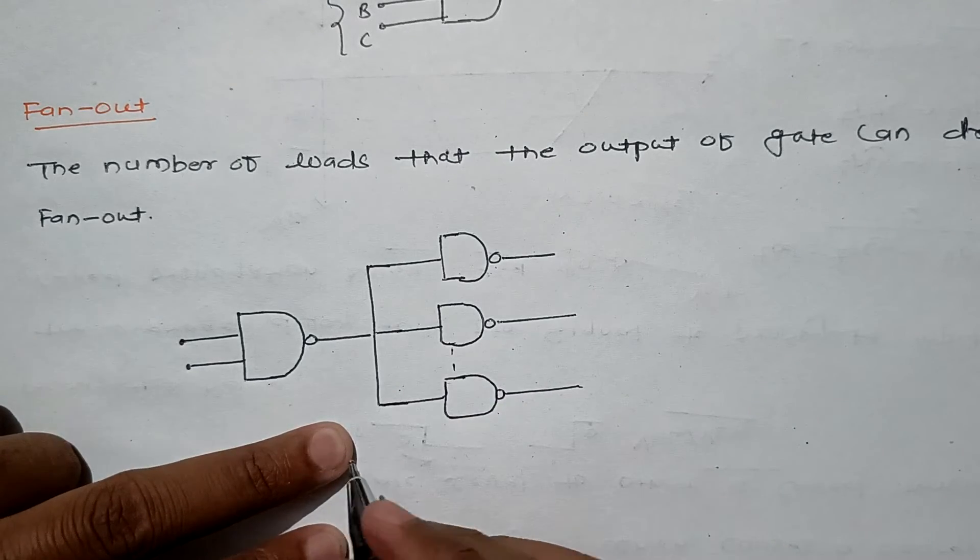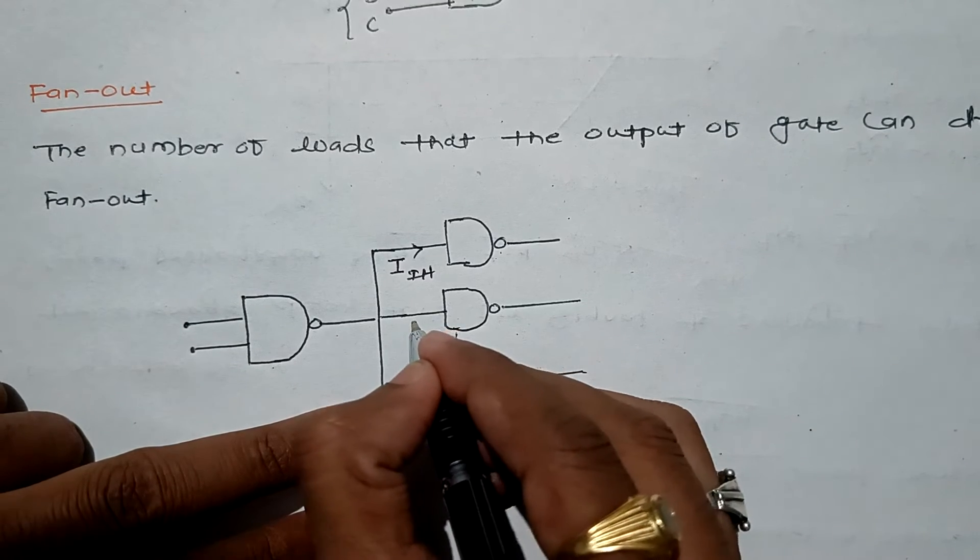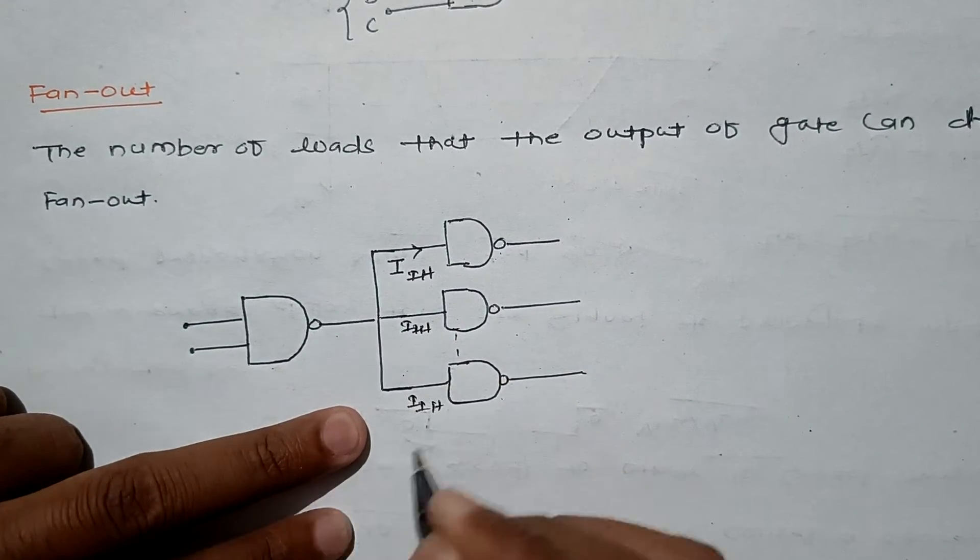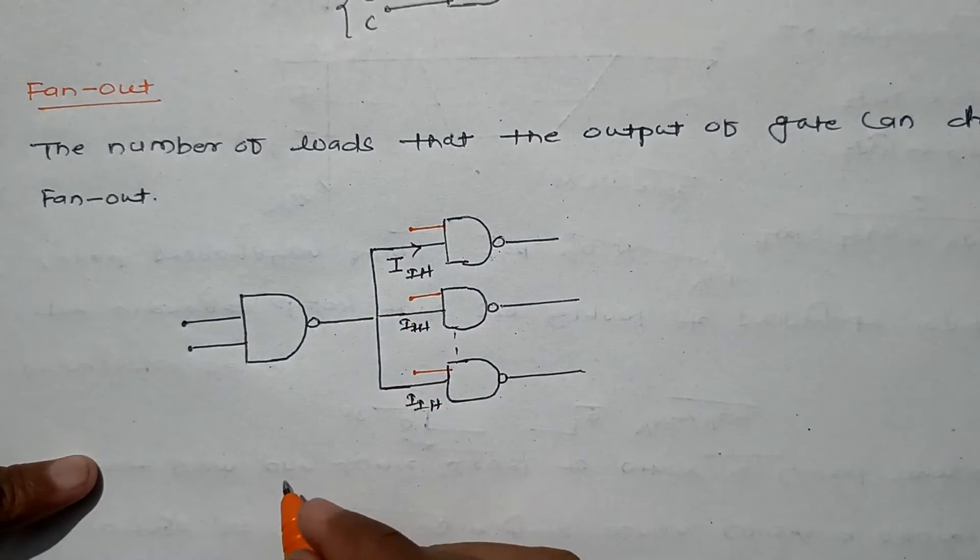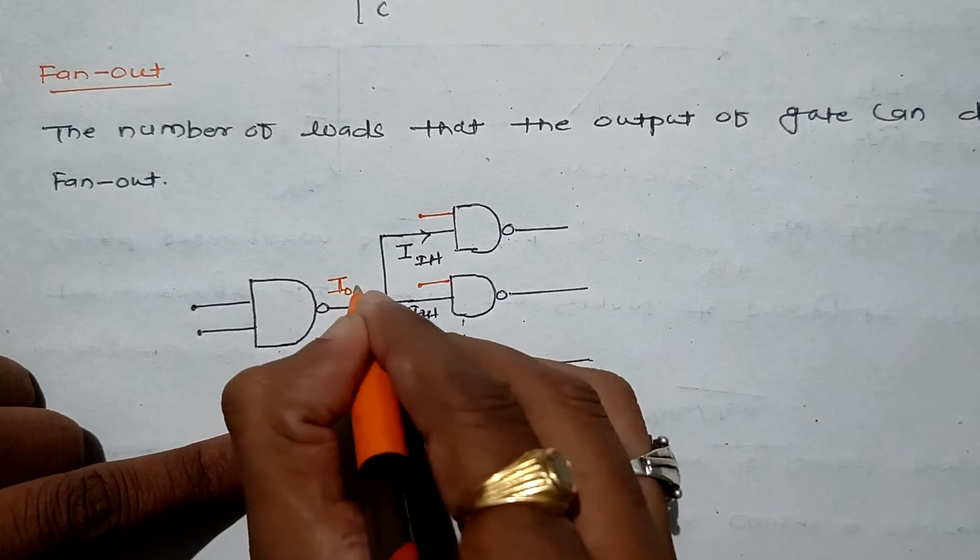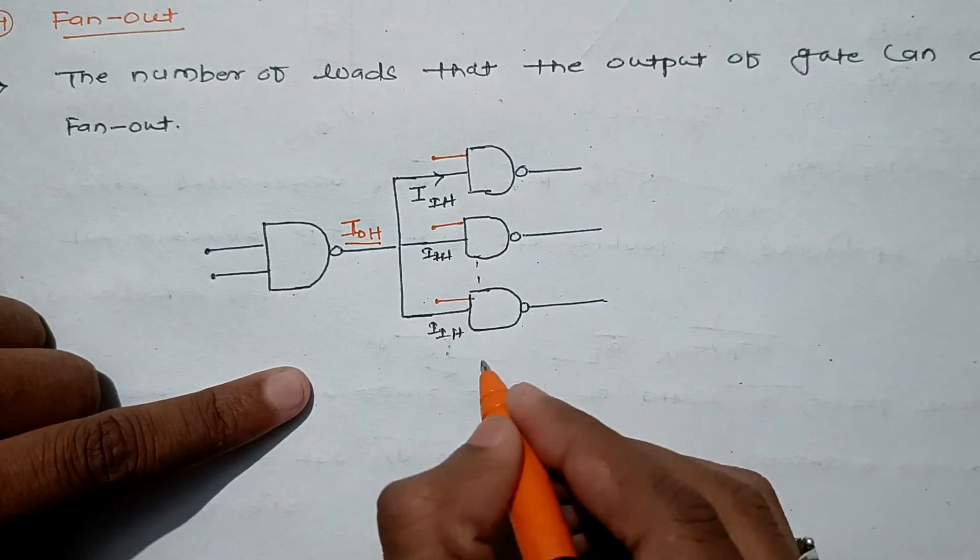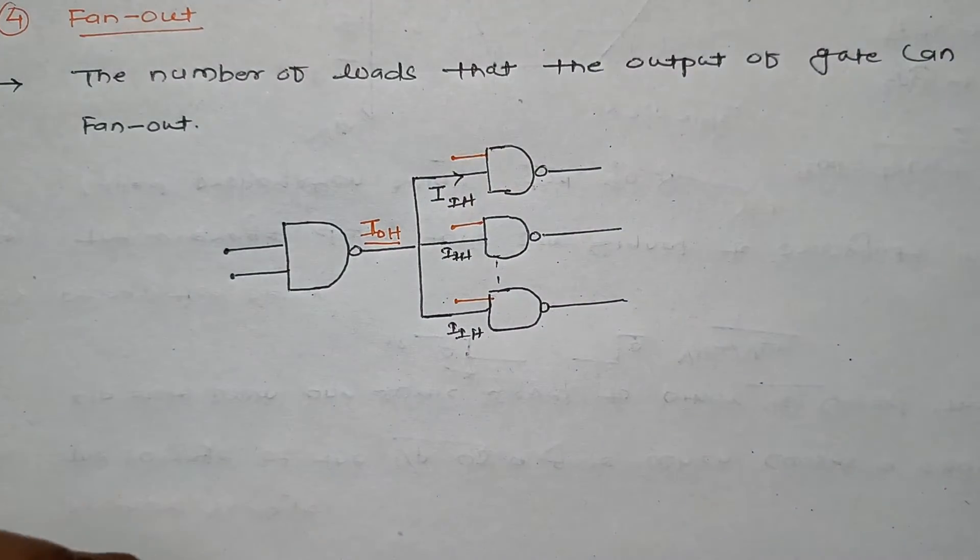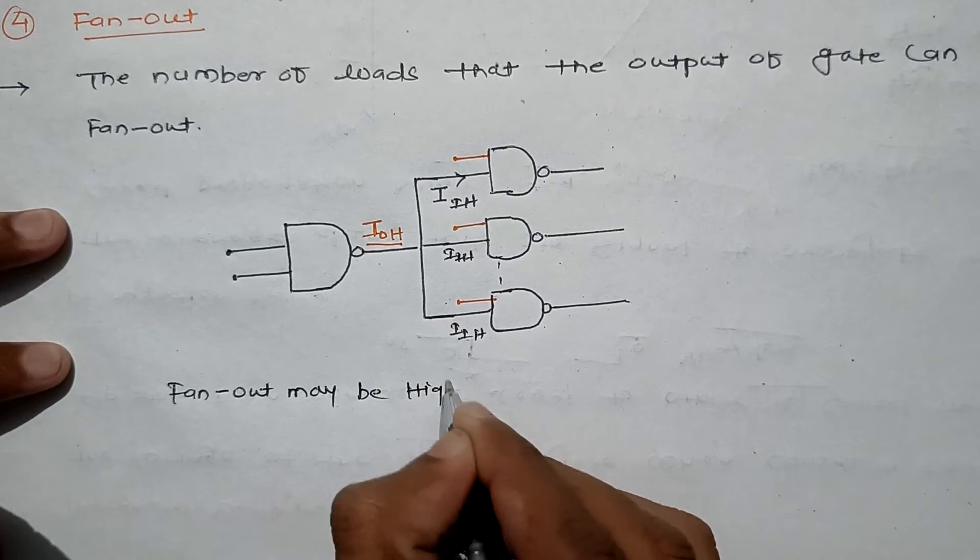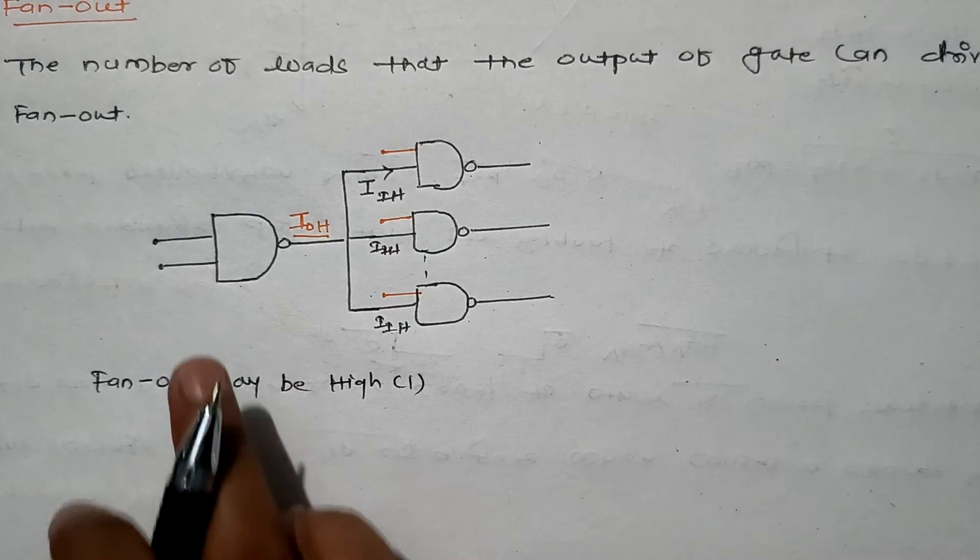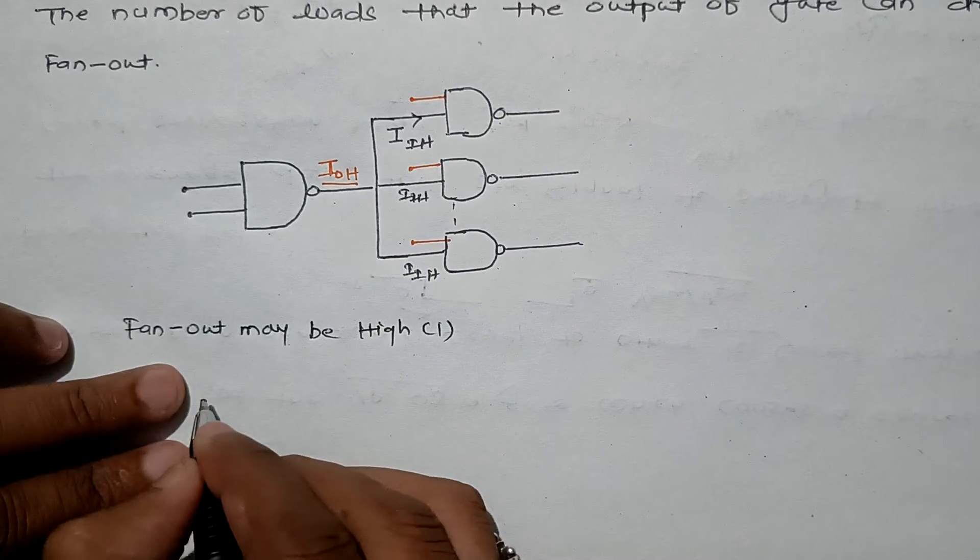Current flows as IIH (input high current) to each gate. If it handles N number of loads, fan-out can be in two states: one can be high state. When output is high and it is driving these particular loads, we determine high state fan-out.